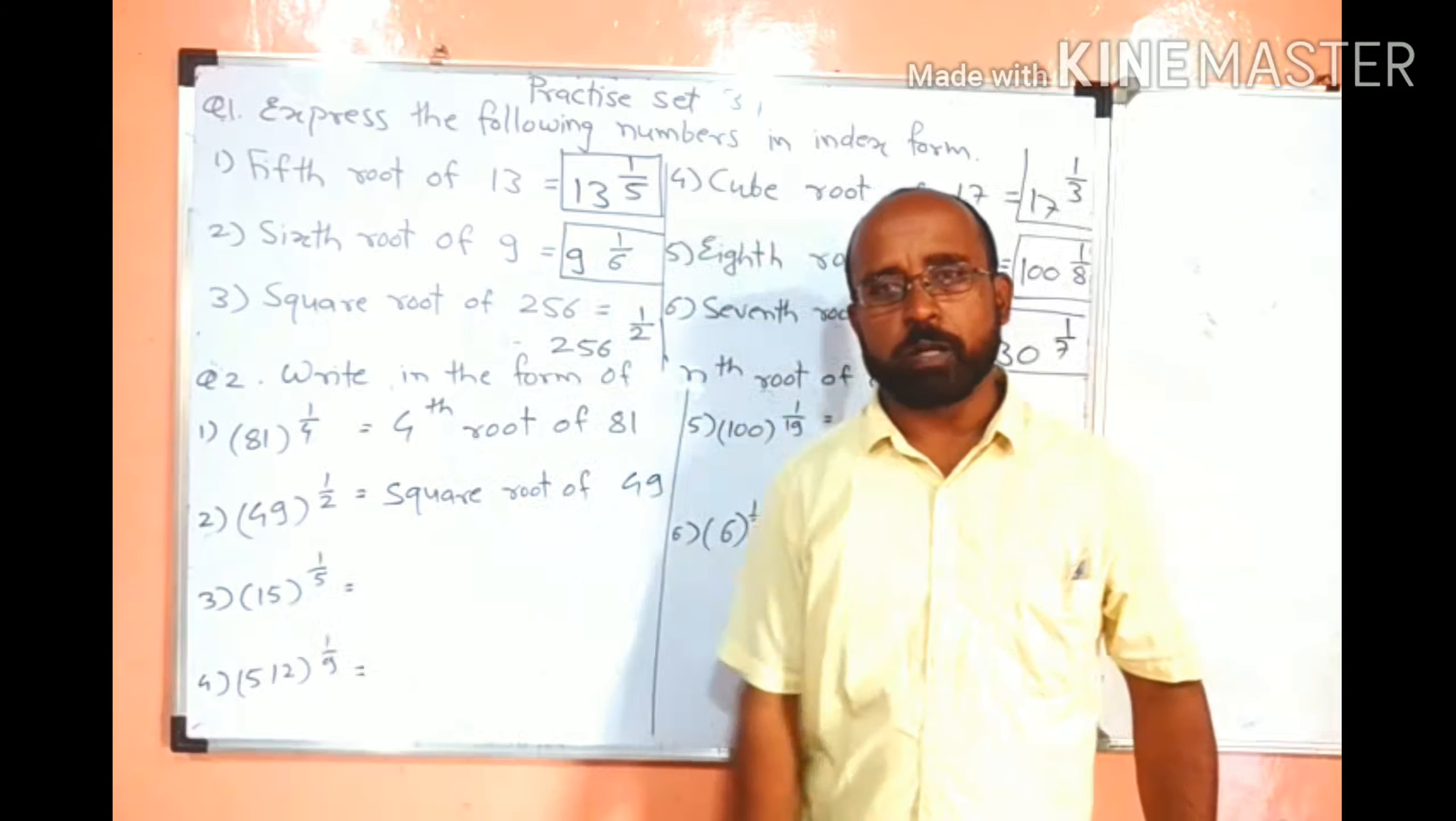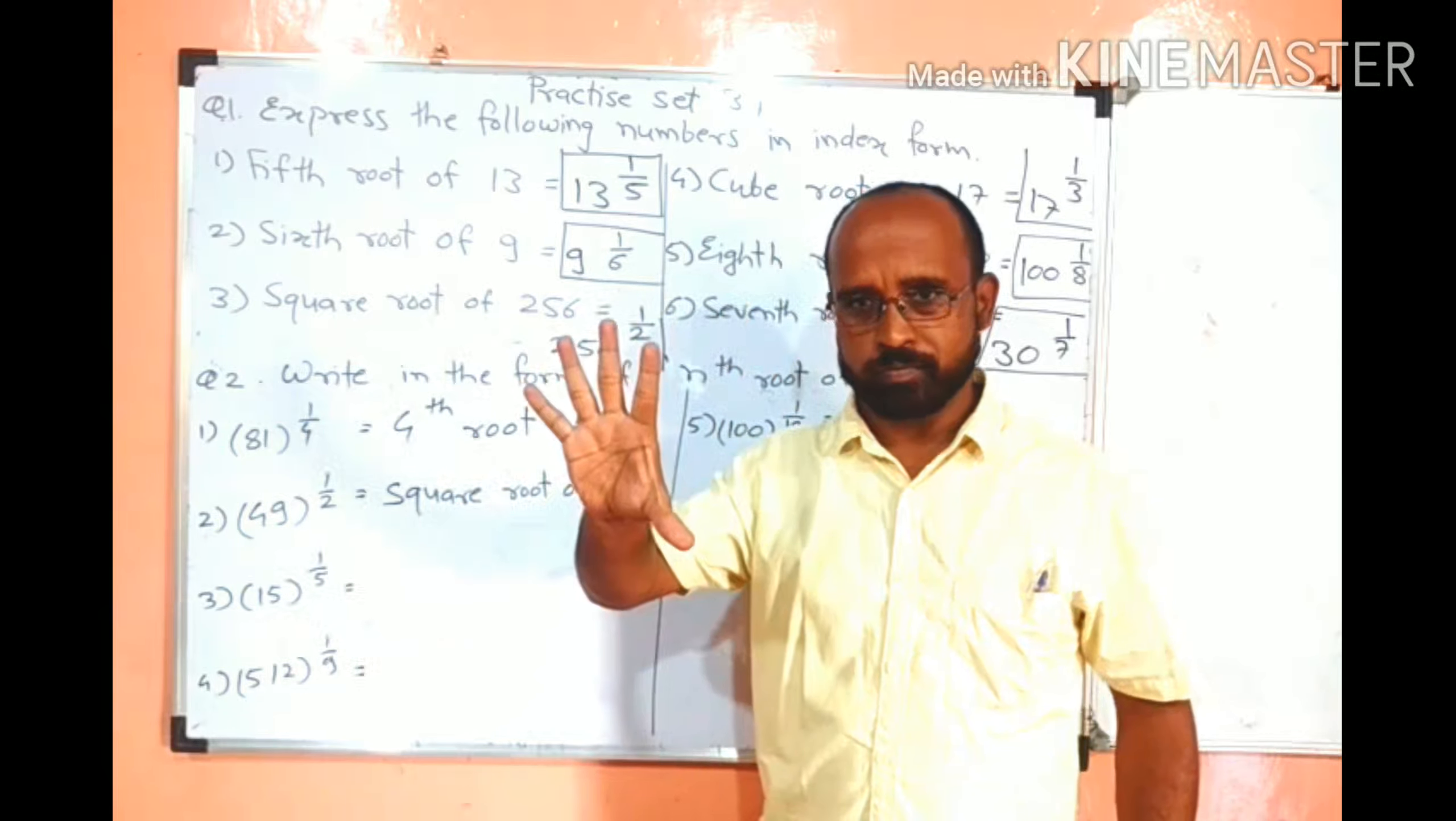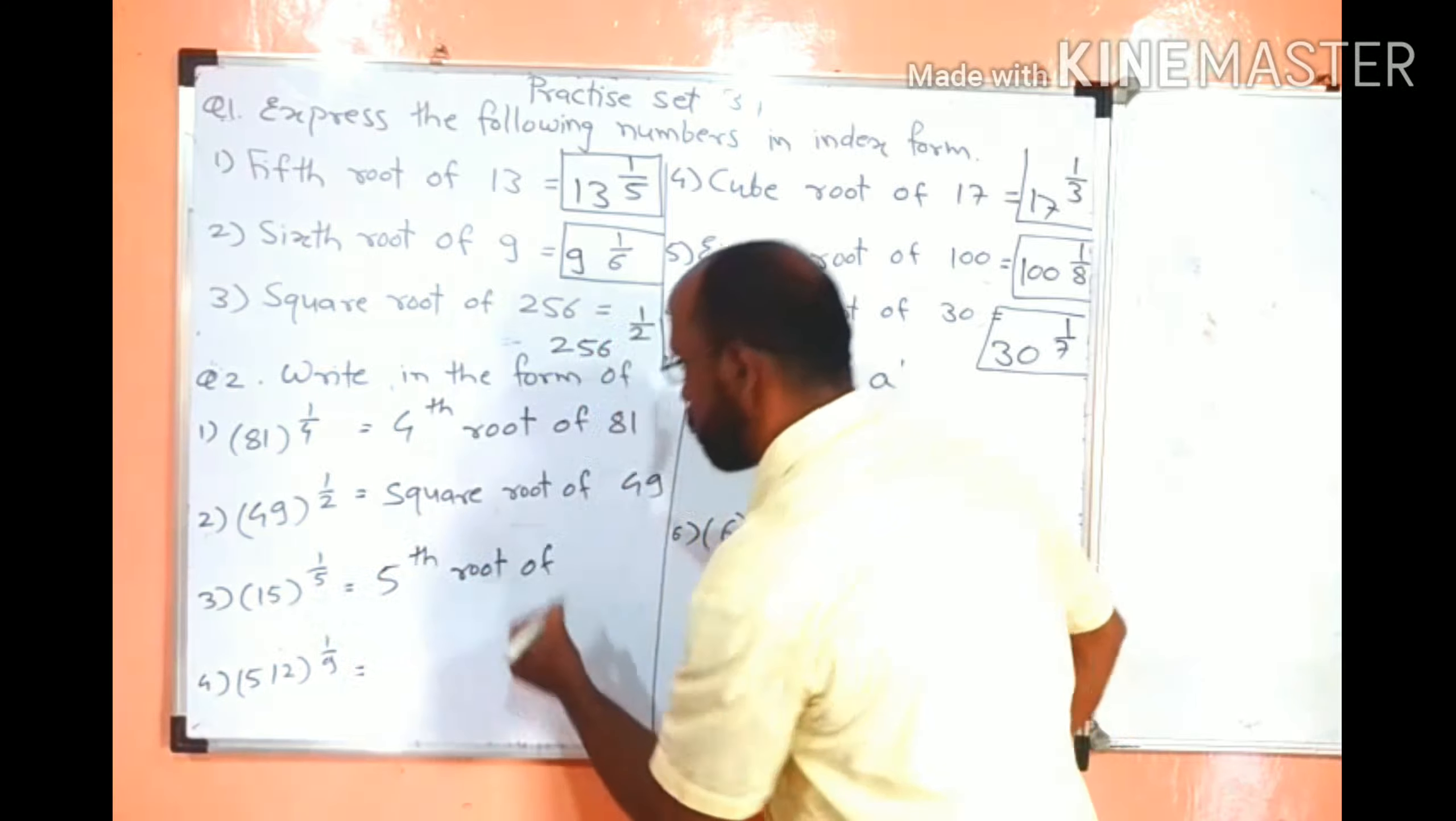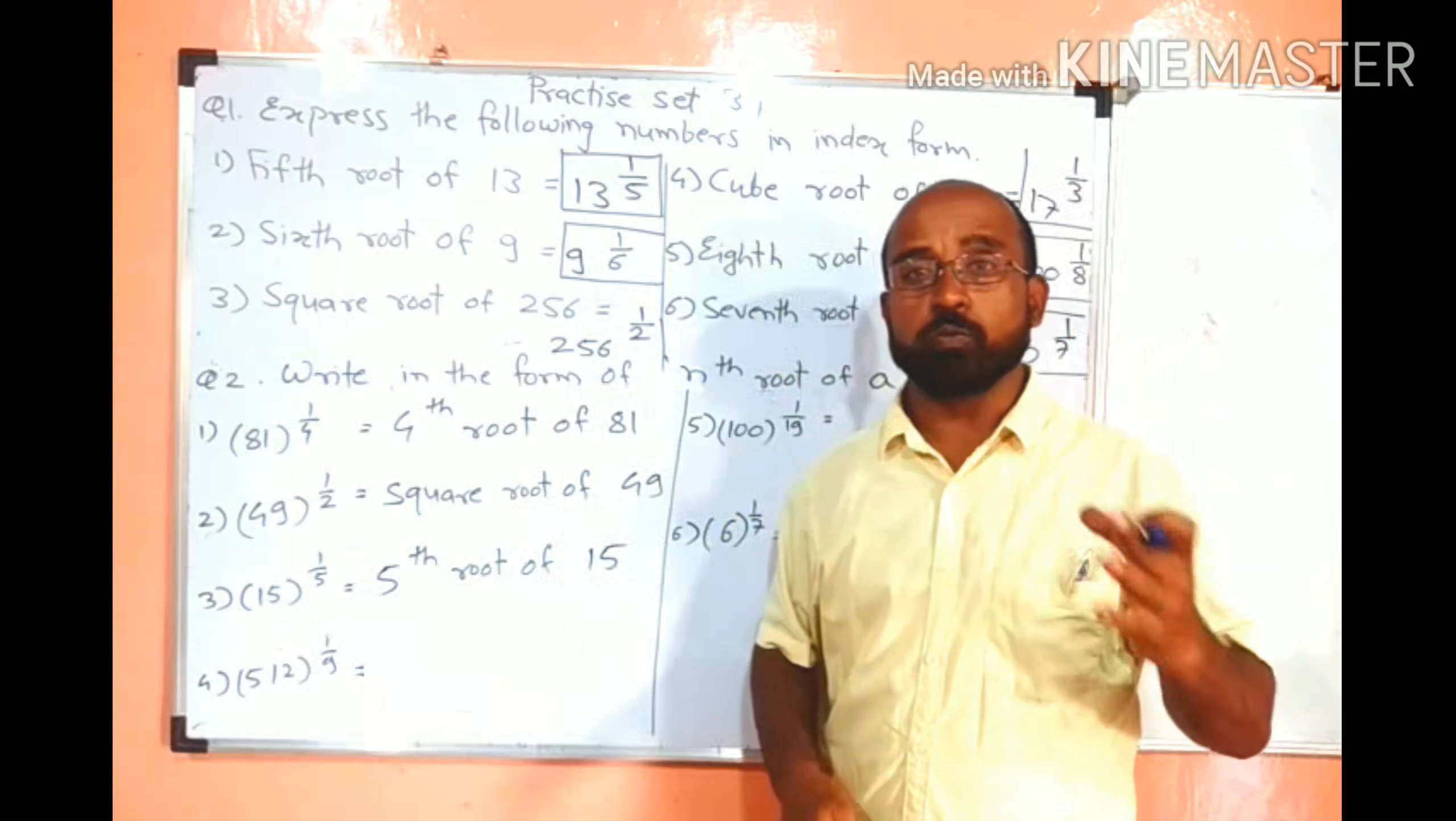15 raised to 1 upon 5. Which number is base? 15. Which number is in the root? Root is 5. So we will write fifth root. Root is 5, so we will write fifth root of.